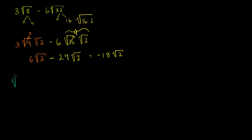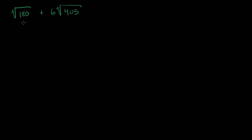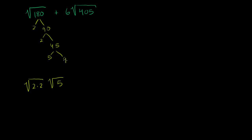Let's do another one. Let's say I have the square root of 180 plus 6 times the square root of 405. This is really an exercise in being able to simplify these radicals. So 180 is 2 times 90, which is 2 times 45, which is 5 times 9. So the first term can be written as the square root of 2 times 2, times the square root of 5, times the square root of 9.